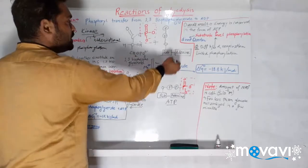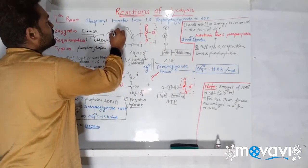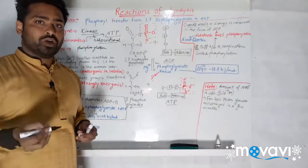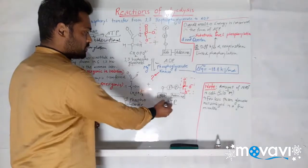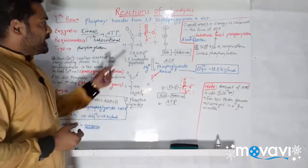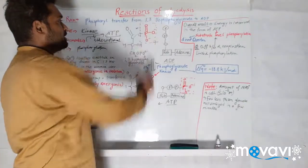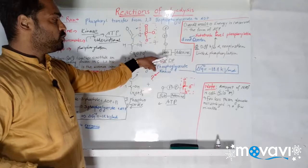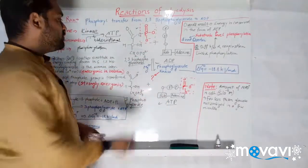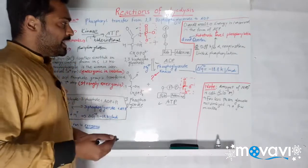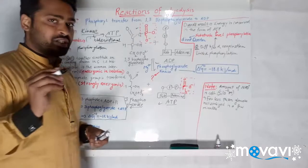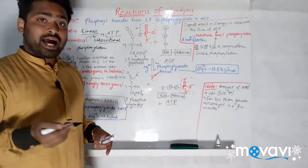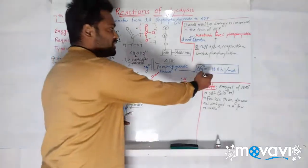The type is phosphorylation, and the requirement is ADP — the phosphoryl group transferred goes onto ADP to make it ATP. This is the first reaction where we produce ATP. The phosphoryl group shown in red is transferred to ADP to make ATP, and what we get in the process is 3-phosphoglycerate. This reaction is exergonic, with ΔG = −18.8 kJ/mol.